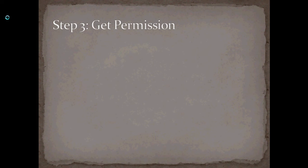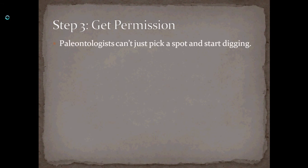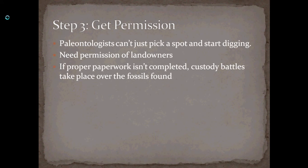Step three is probably the most boring part of prospecting: you have to get permission before you can go out and dig anywhere. Paleontologists really can't just pick a spot and start digging — you need the permission of the landowners. If you don't have the proper paperwork, custody battles take place over the fossils found. Sue is a primary example of this — the big T-Rex housed at the Field Museum. Sue was found on an Indian reservation, and the team of paleontologists who had gone out to dig up Sue had paid who they thought was the landowner, a rancher who had that section of land. Unfortunately, because it was on an Indian reservation, that was not sufficient permission.